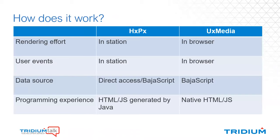Let's talk about how it works and how it's different from HXPX. First difference: in HXPX, most rendering takes place inside the station itself. The station spins up an instance of that PX page internally in Java and uses the HXPX APIs — which are also Java — to send HTML and JavaScript down to the browser. With UX media, all of that takes place in the browser. The station's only rendering responsibility is to send the raw PX data down, and then the browser does the work of standing up the PX page. Second difference: in HXPX, most user events like clicks actually get sent up to the station for processing — there's a network call and the JACE is doing the work. In UX media, user event handling happens directly in the browser, which is much faster.